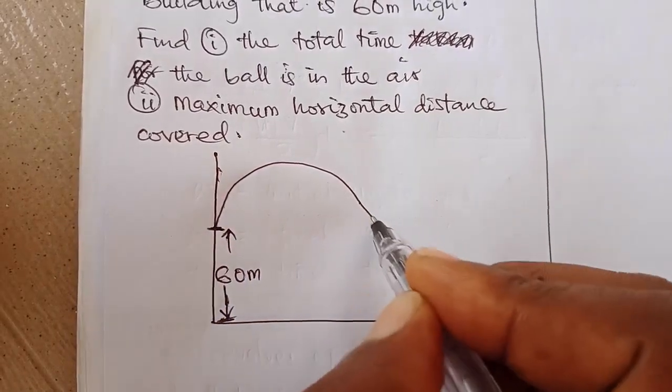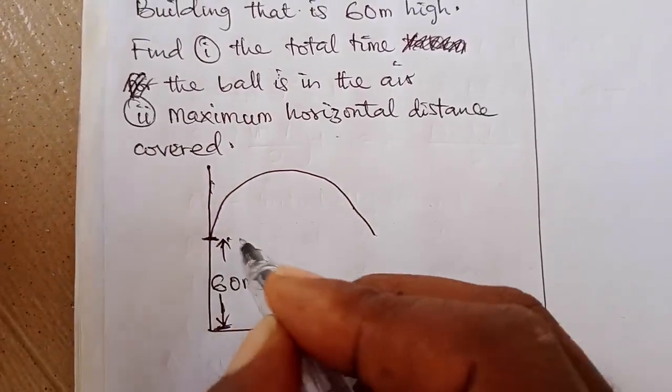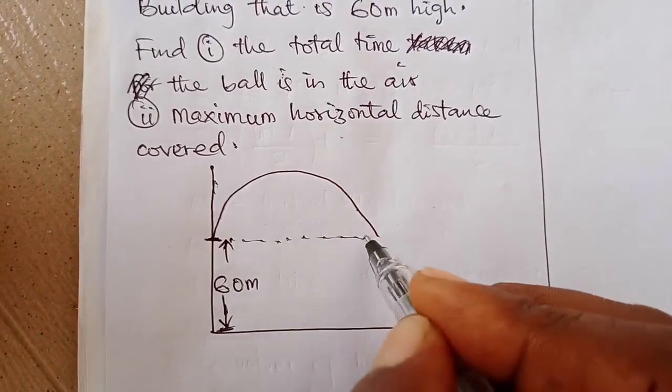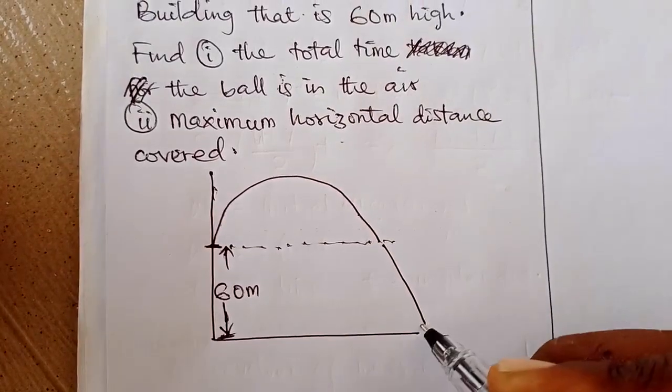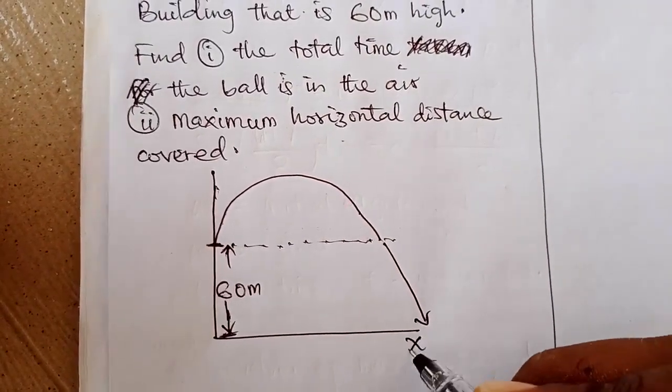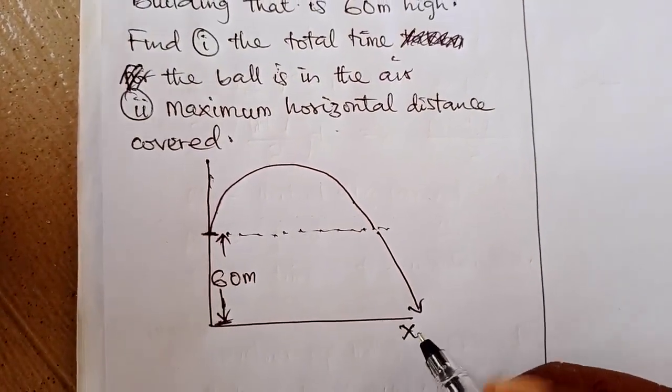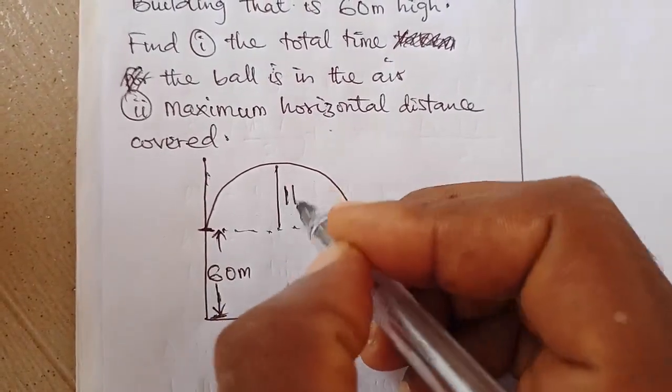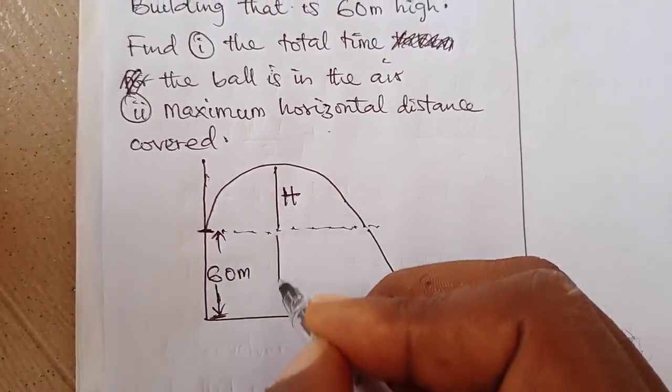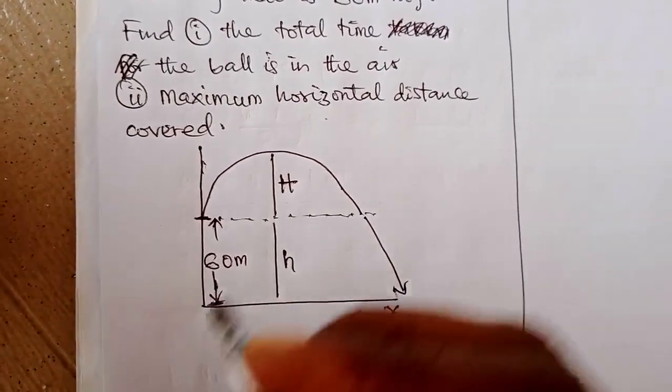And it was projected, meaning it covered vertical distance and also horizontal distance. The thing is that it did not land at the same level from which it was projected; it came to the ground. So it means there is a height here H and also a height here, let's say small h.